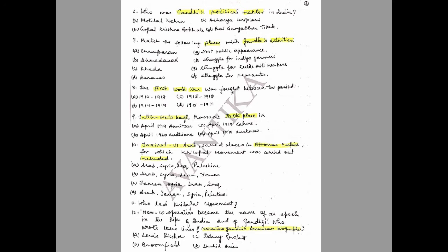Question 7: Match the following places with Gandhi's activities. Places: A) Champaran, B) Ahmedabad, C) Kheda, D) Banaras. Match with: 1) First public appearance, 2) Struggle for indigo farmers, 3) Struggle for textile mill workers, 4) Struggle for peasants.